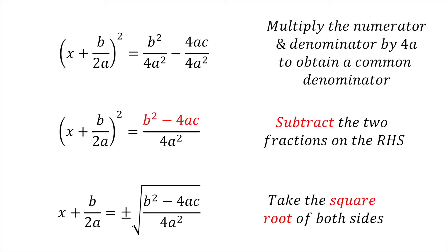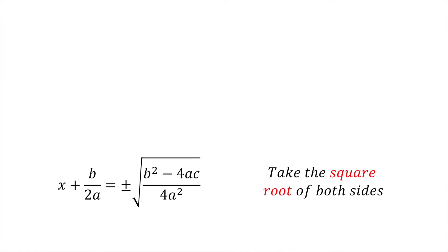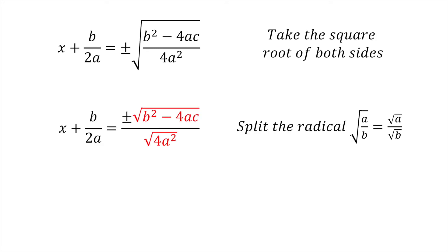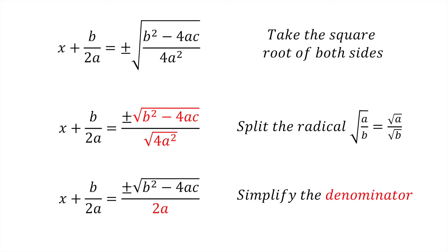This gives us x plus b divided by 2a equals plus or minus the square root of b squared minus 4ac all divided by 4a squared. Using the surd law, the square root of a quotient equals the quotient of the square roots. The right hand side becomes plus or minus the square root of b squared minus 4ac divided by the square root of 4a squared. Simplifying the denominator, the square root of 4a squared is 2a.